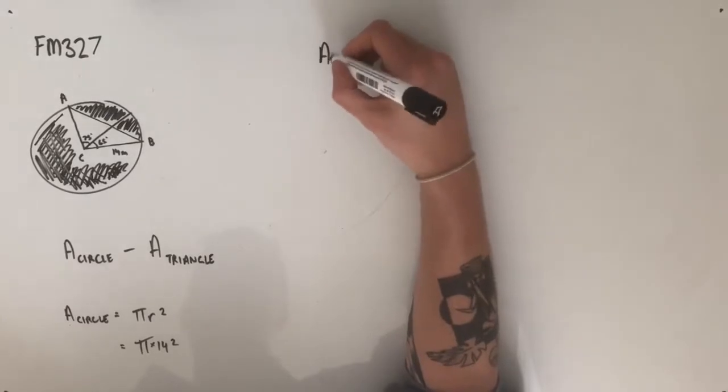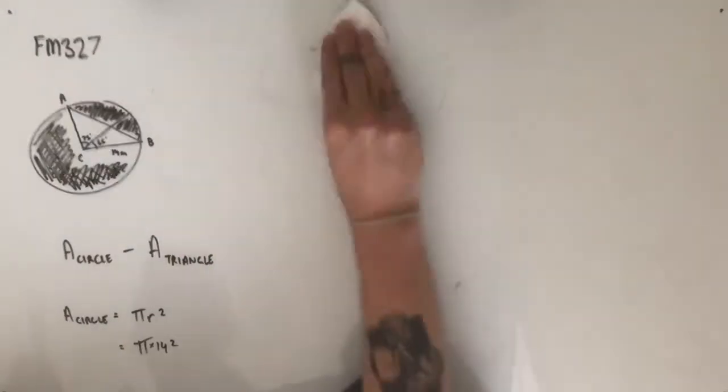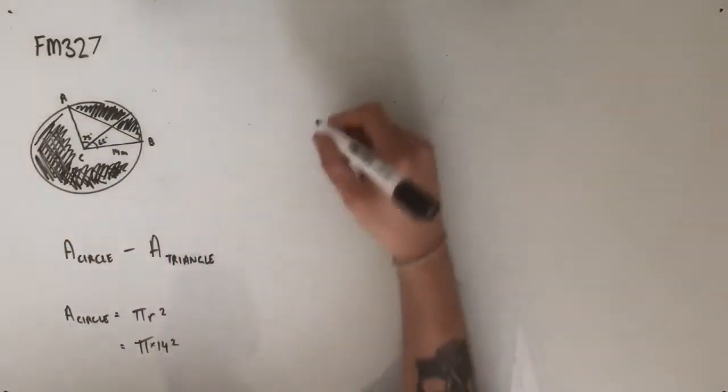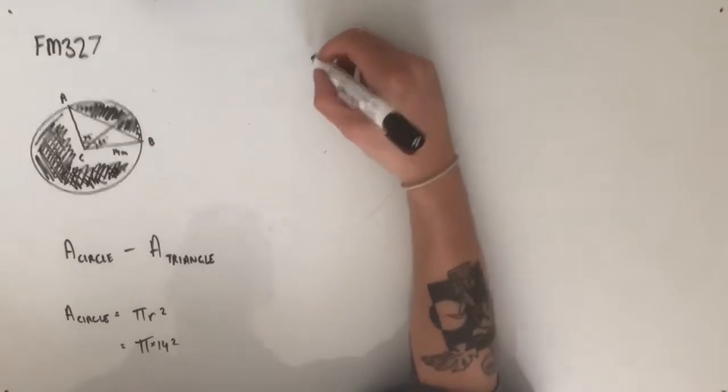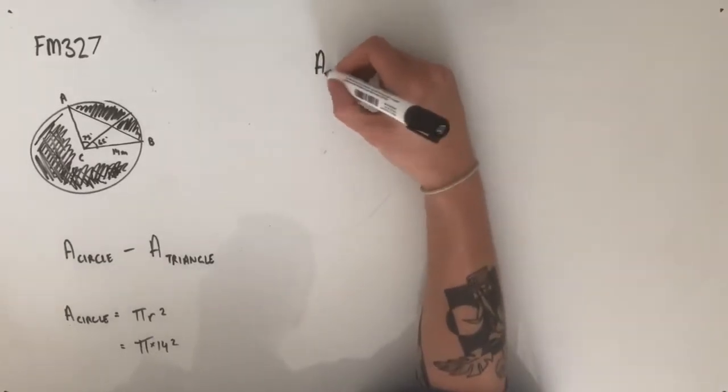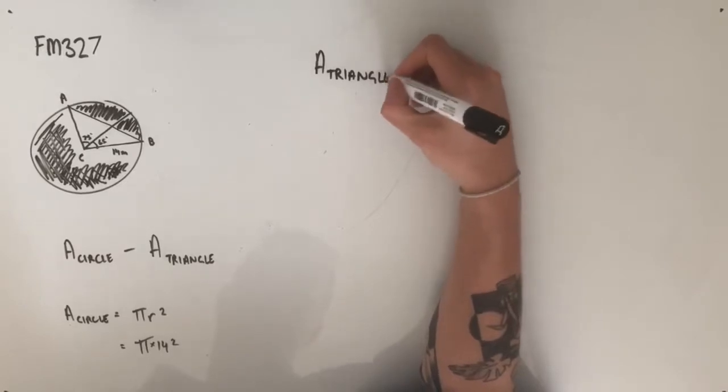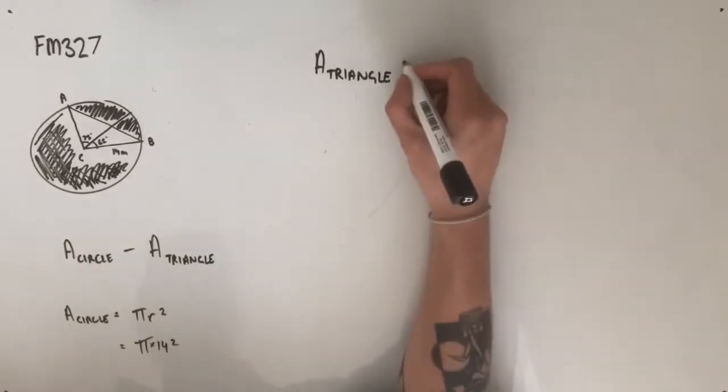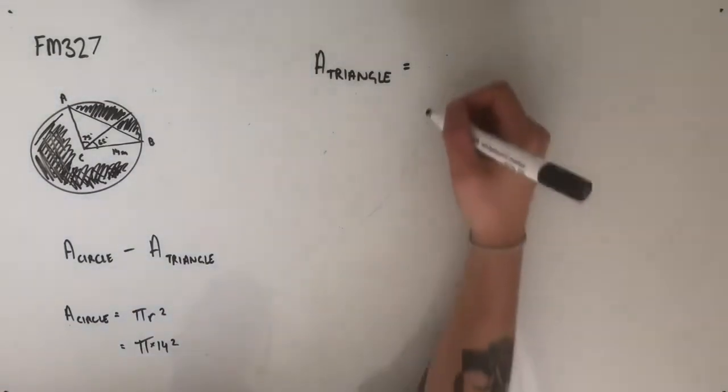Going on to find the area of the triangle. Also, incidentally, you could just use the area of a segment formula to find the answer to this question. But that formula is effectively the same thing that we're doing here. It's just a shorter way, a way of condensing it, I guess. So I thought I'd run you through the slightly longer way so you get the understanding.